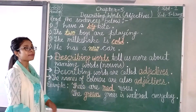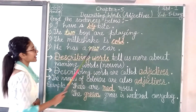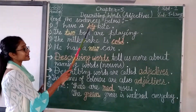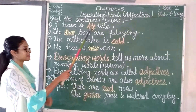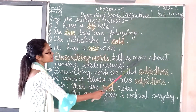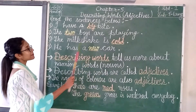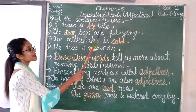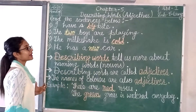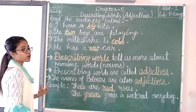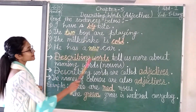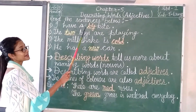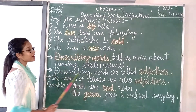So, here what I want to tell you — the words that I have highlighted are describing nouns. And the words that tell us more about the naming words are called describing words. Describing words tell us more about naming words — nouns.